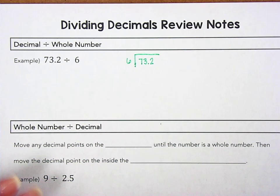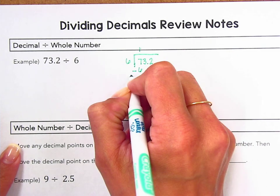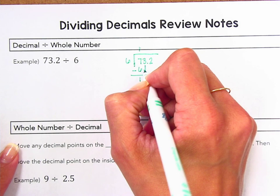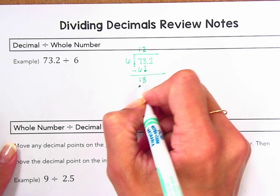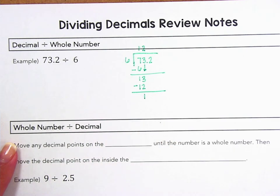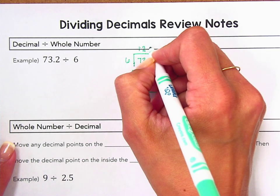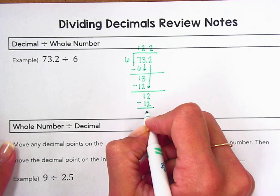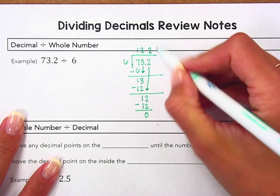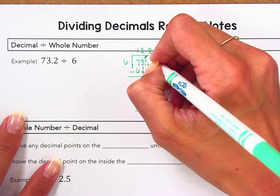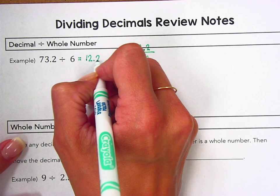Once we've set this up, we can go ahead and divide. Six goes into seven one time. Six times one is six, so we subtract that. We're left with one and we bring three down. Six can go into thirteen two times, and six times two is twelve, so we subtract twelve. Six can't go into one, so we bring those digits down. Six goes into twelve two times; six times two is twelve, so we subtract. Now that we have a remainder of zero and no more digits to bring down, we're done dividing. The decimal moves straight up, so seventy-three and two tenths divided by six is equal to twelve and two tenths.